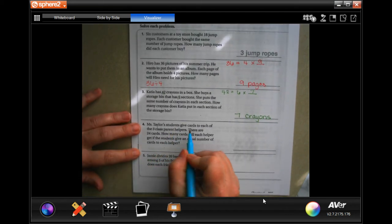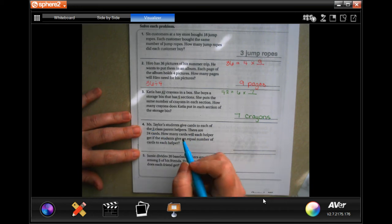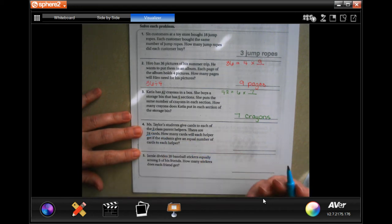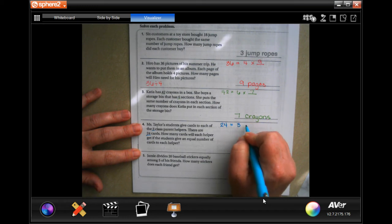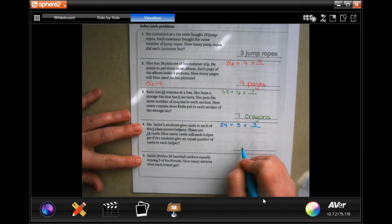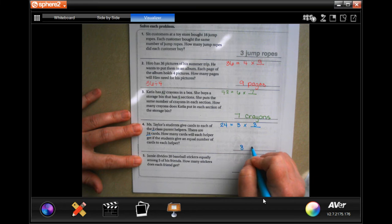Ms. Taylor's students give cards to each of three class parent helpers. There are 24 cards, so 24 equals 3 times what? Three times eight, so eight cards.